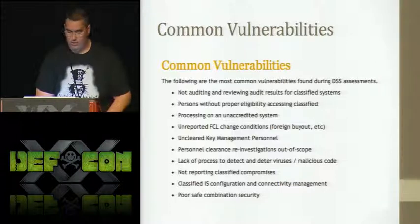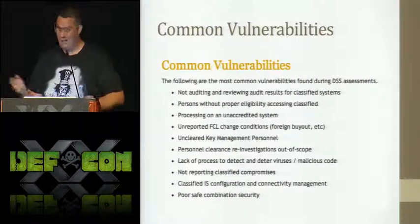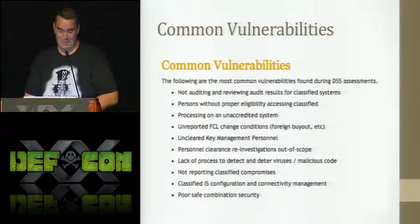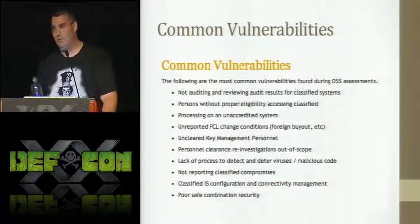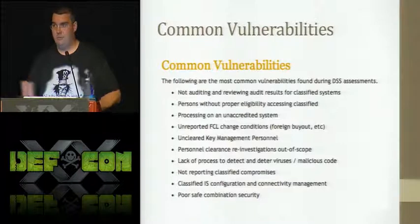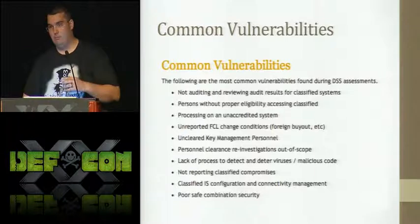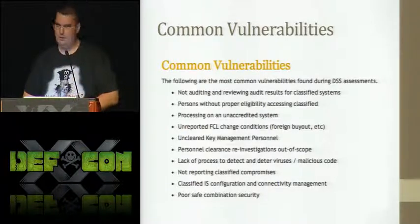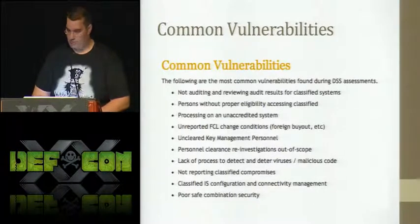Here are some common vulnerabilities pulled from the DSS website. Not auditing is the top one. Not reporting classified compromises. Poor safe combinations. Processing on unaccredited systems — we go to a company and they have systems where they're just processing classified on them. We used to shut them down and take the hard drives and put them in a safe. But now we just tell them it's a good thing to submit a document for accreditation as soon as possible — we can't tell them when they have to submit it.